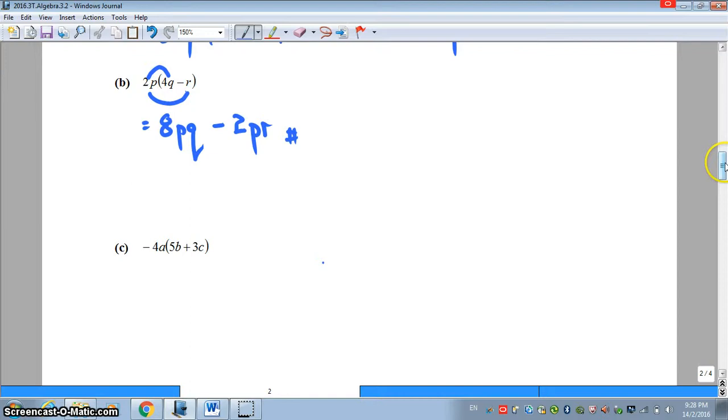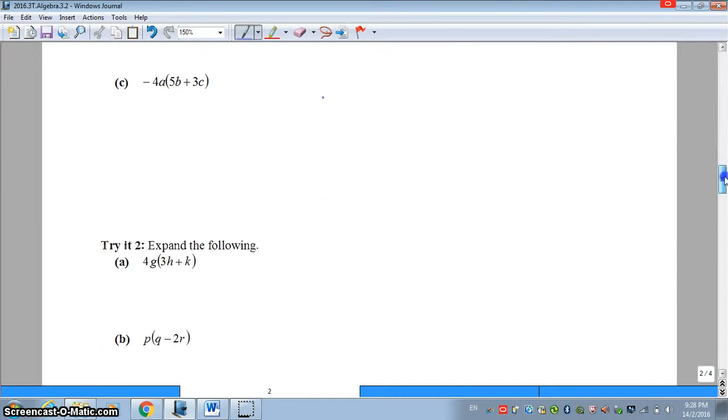Moving on to part C. Same thing. Term by term rainbow expansion. Negative 4a multiplied by 5b. Negative 4 multiplied by 5, we will get a negative 20. You write down your a and b. Once you're done, please move on to the second term in the bracket. Negative 4a multiplied by positive 3c. Negative 4 multiplied by positive 3, you get a negative 12, followed by ac. And there you have it. I'm done with my example.